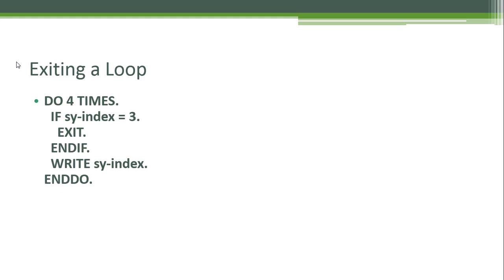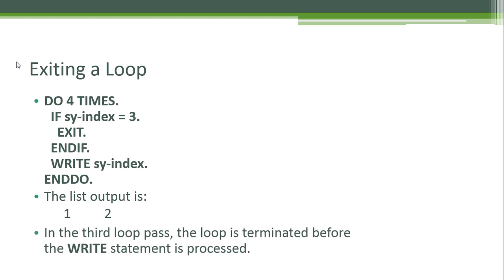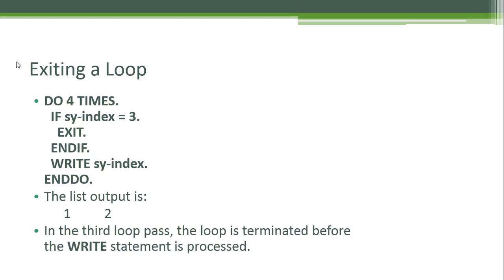To exit a loop: DO four times, IF SY-INDEX equals 3, EXIT. We write all SY-INDEX values, so the list output is 1 and 2. When it reaches 3, it exits the loop. In the third loop pass, the loop is terminated before the WRITE statement is processed.